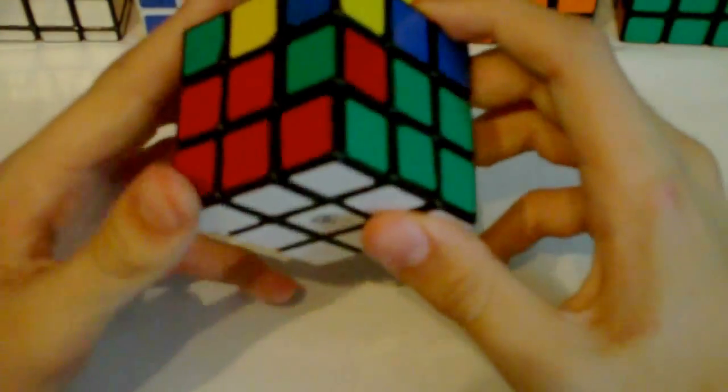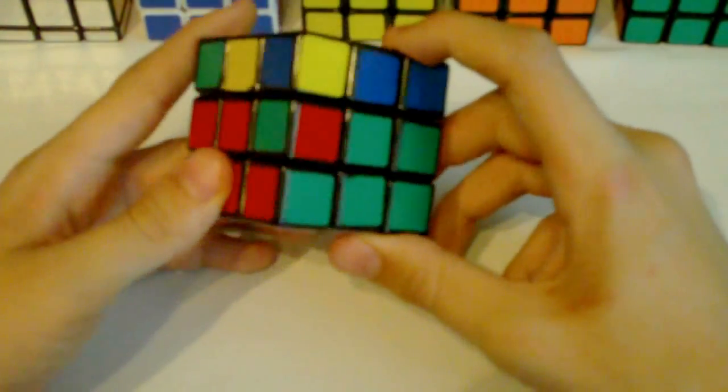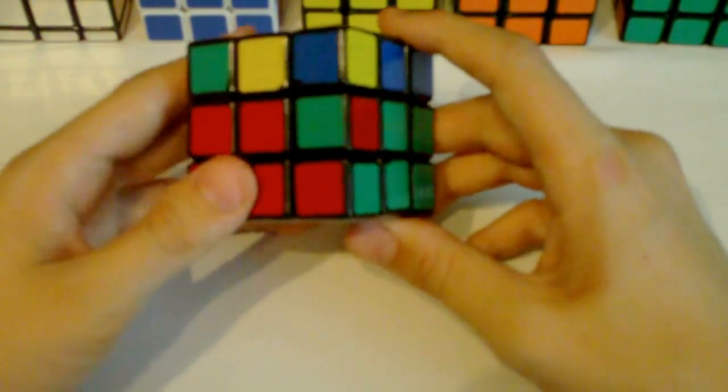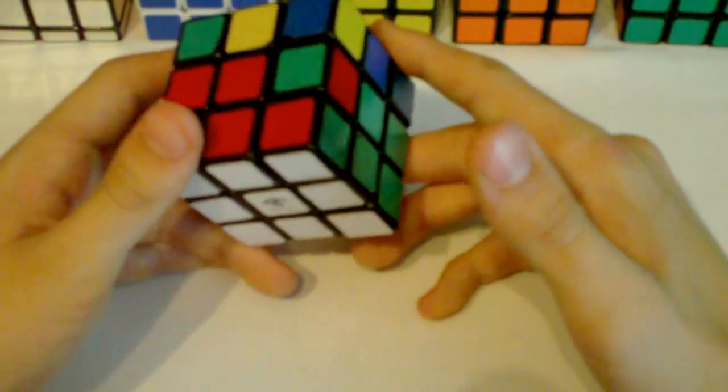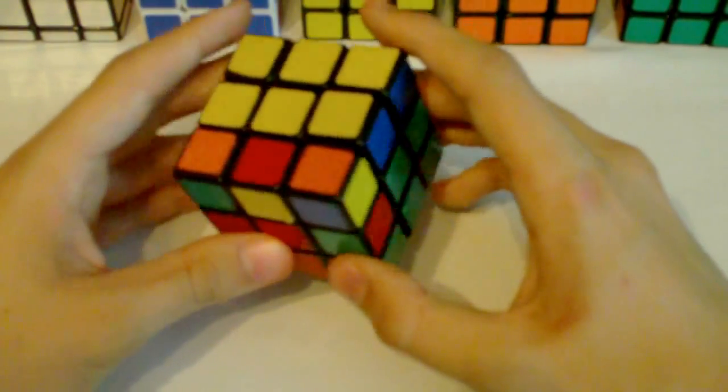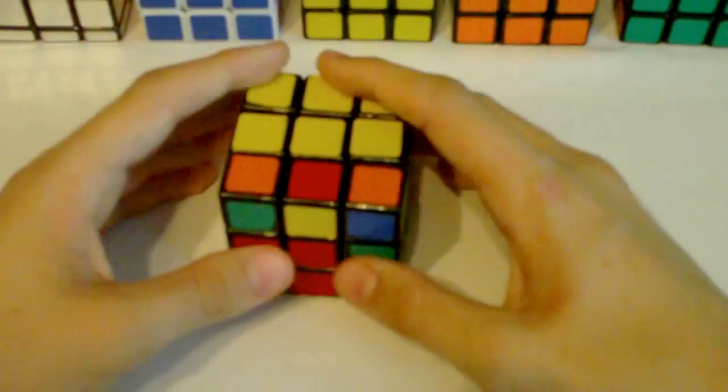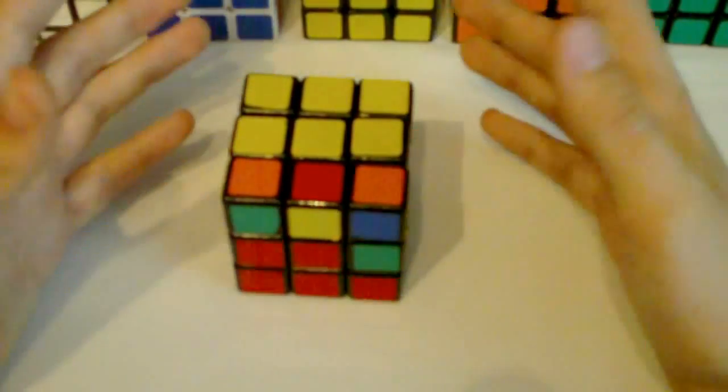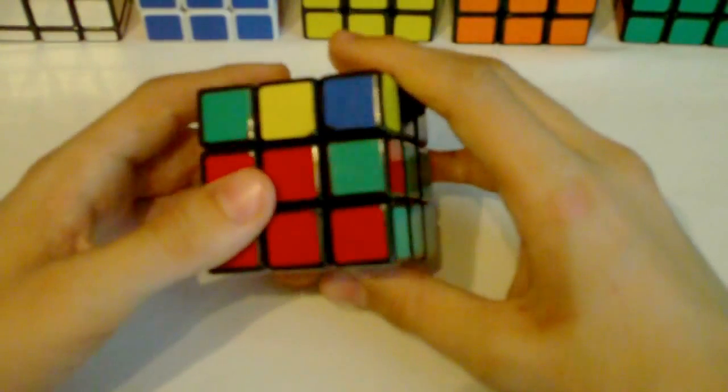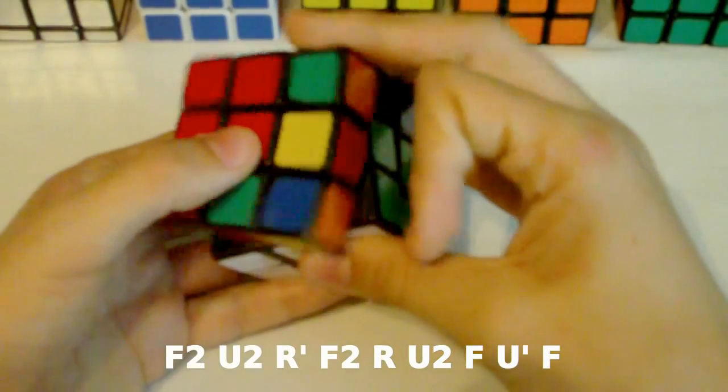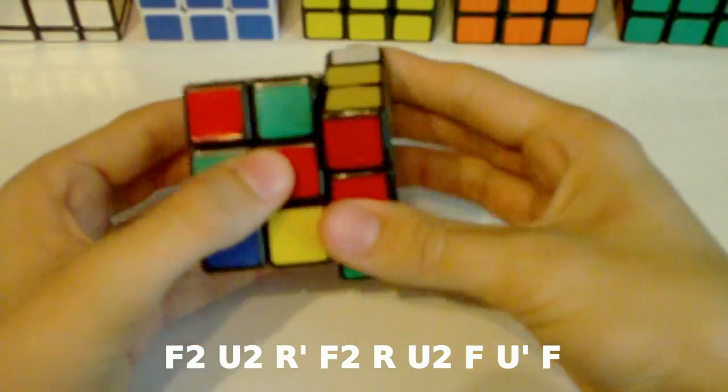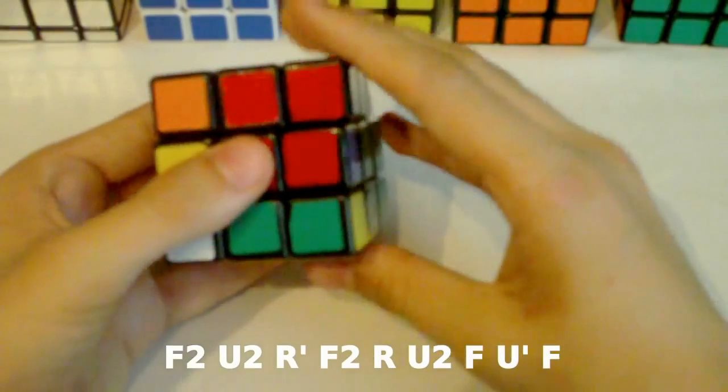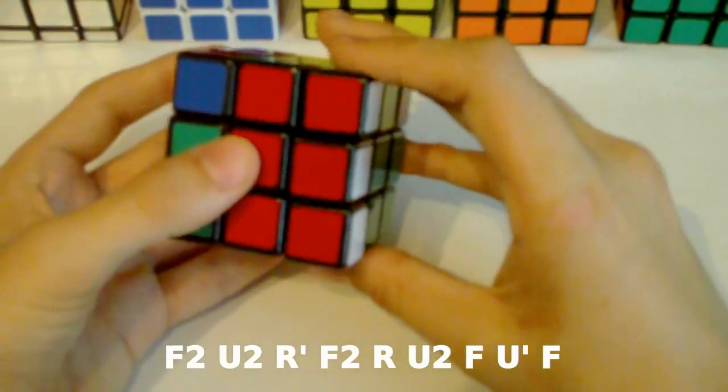This is definitely one of the most important F2L algorithms that you should know. Intuitive F2L users have various ways of solving this case, but you really can't solve this very efficiently with intuitive F2L. So here's an algorithm: F2 U2 R' F2 R U2 F U' F.